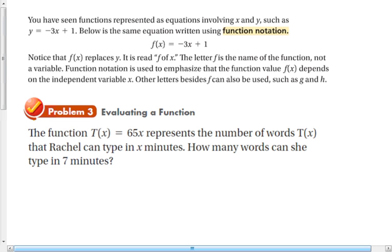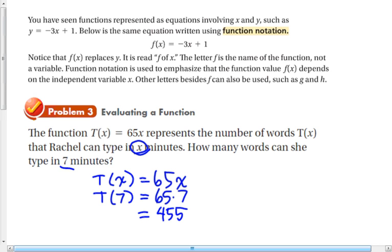Here's an example of a function and we're going to evaluate that. And really all you have to do to evaluate a function is substitute a value in for the correct variable. In this case, we want to know how many words she can type in seven minutes and x is the number of minutes. So we're going to start with our function here and just substitute 7 for x. Now remember that this is t of 7 or the output when the input is 7. It doesn't mean t times 7. And 65 times 7 is 455. So she types 455 words in 7 minutes. You can try one.